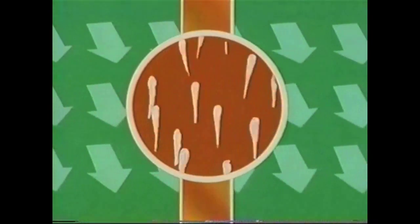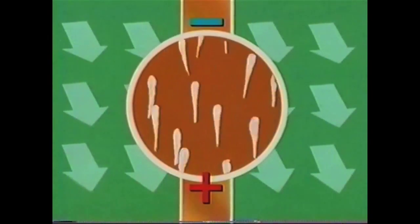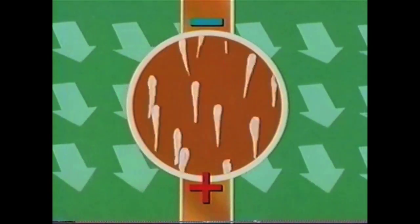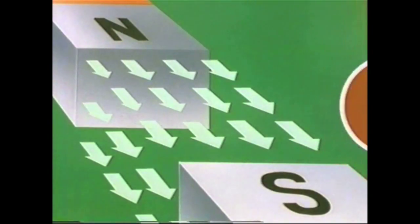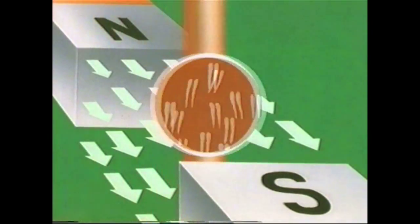These deflections establish a negative and a positive charge at the ends of the conductor. In effect, there are two charged terminals, just as in the wet cell, capable of producing a continuous flow of electric current as long as the conductor is moving.